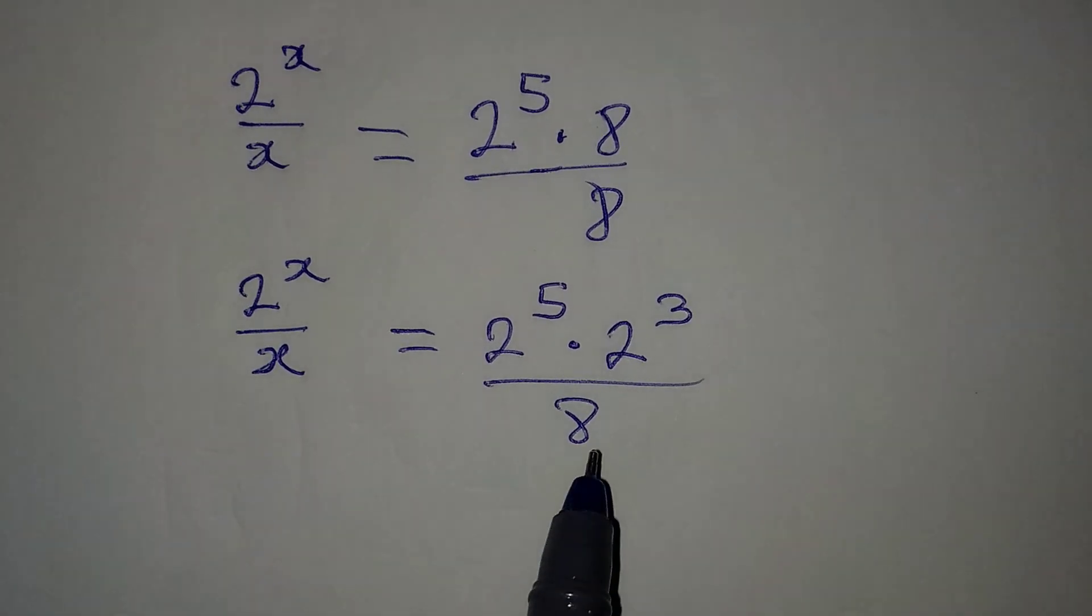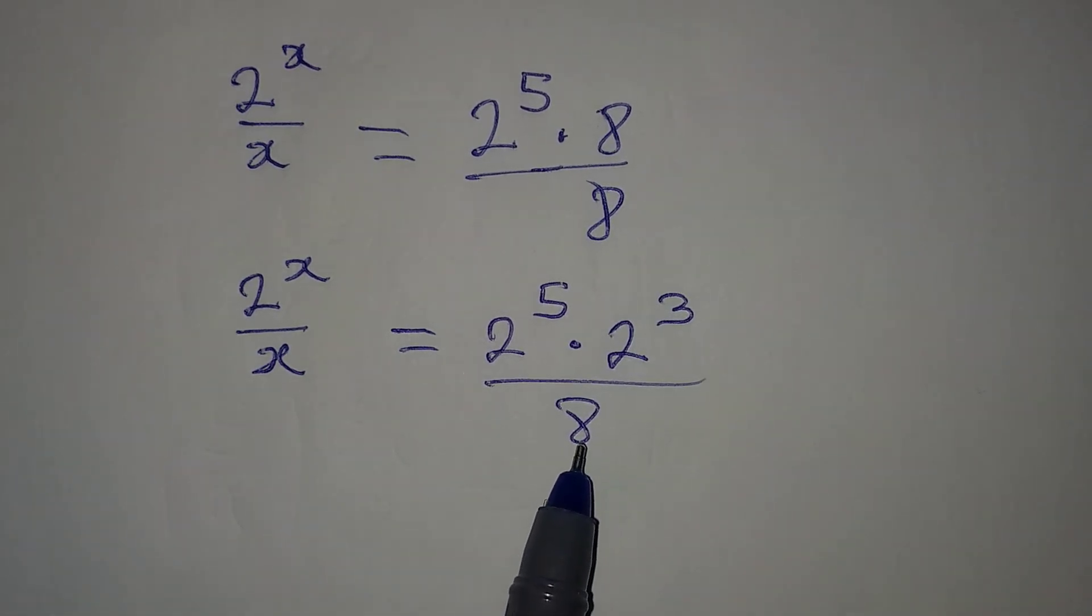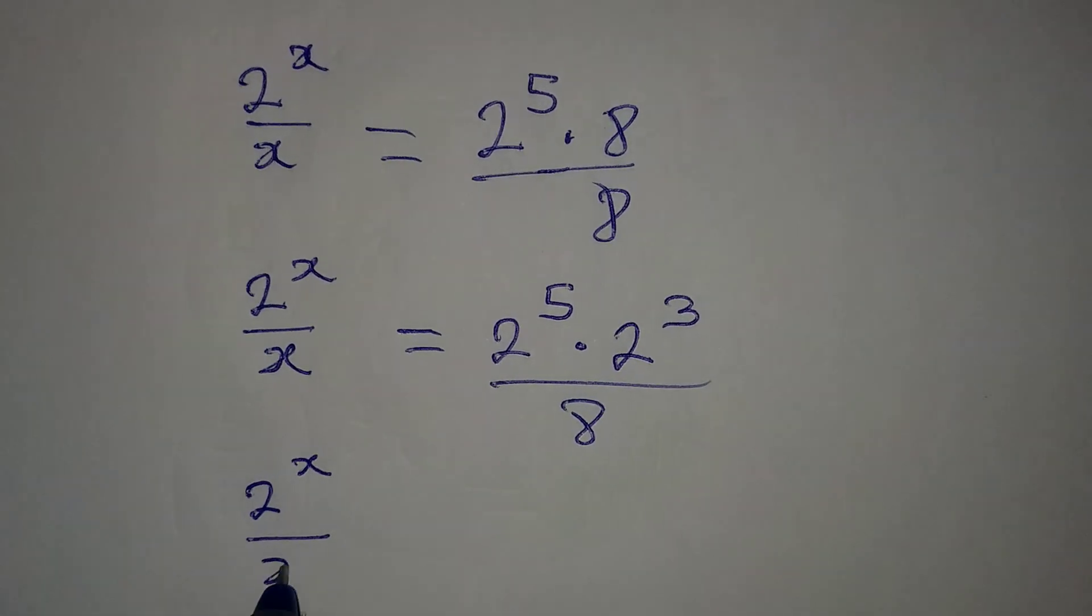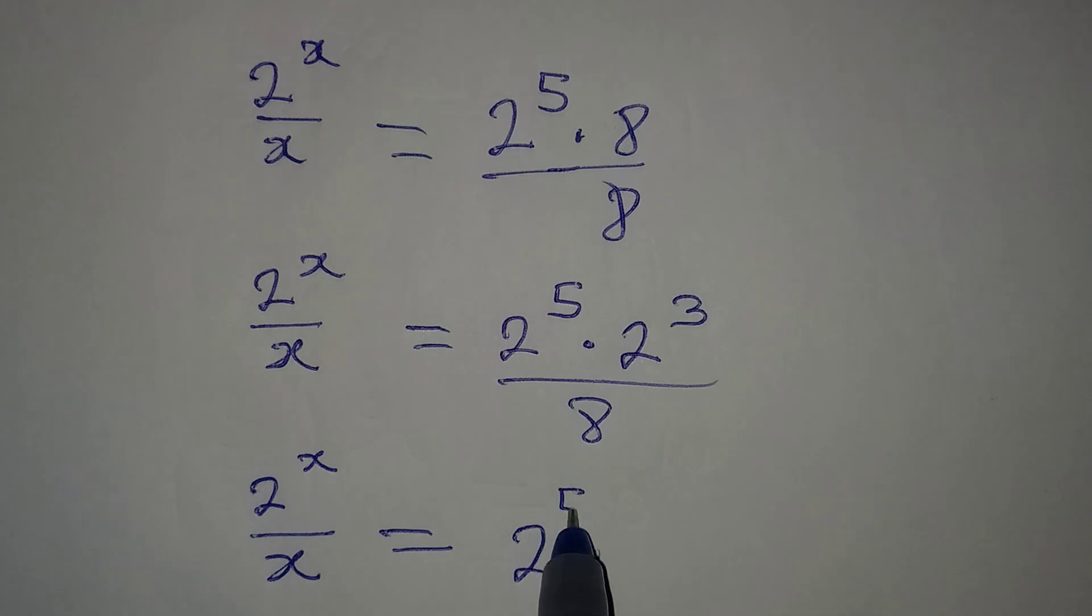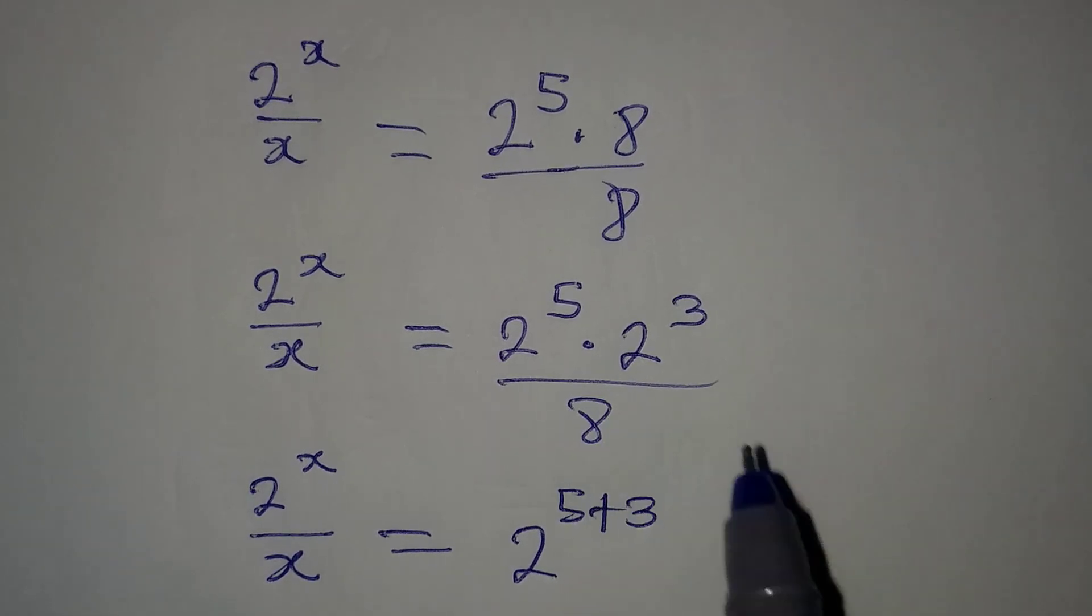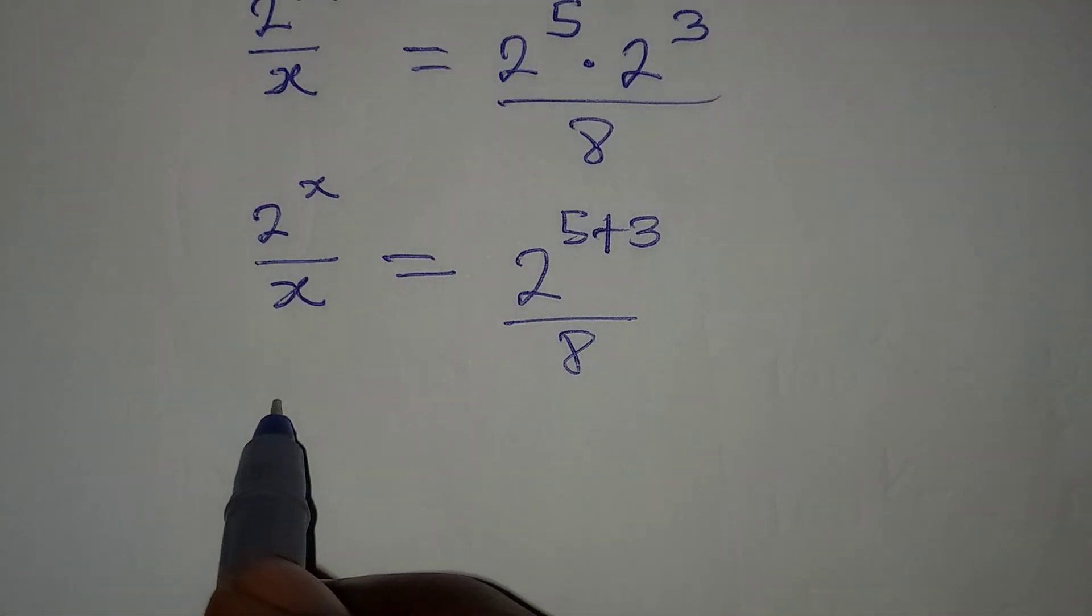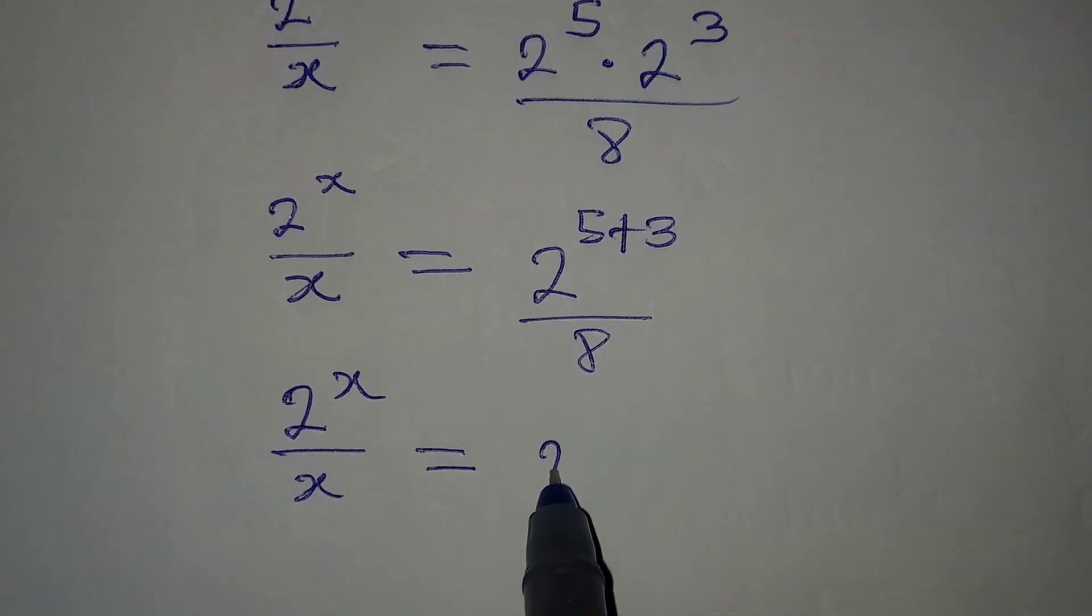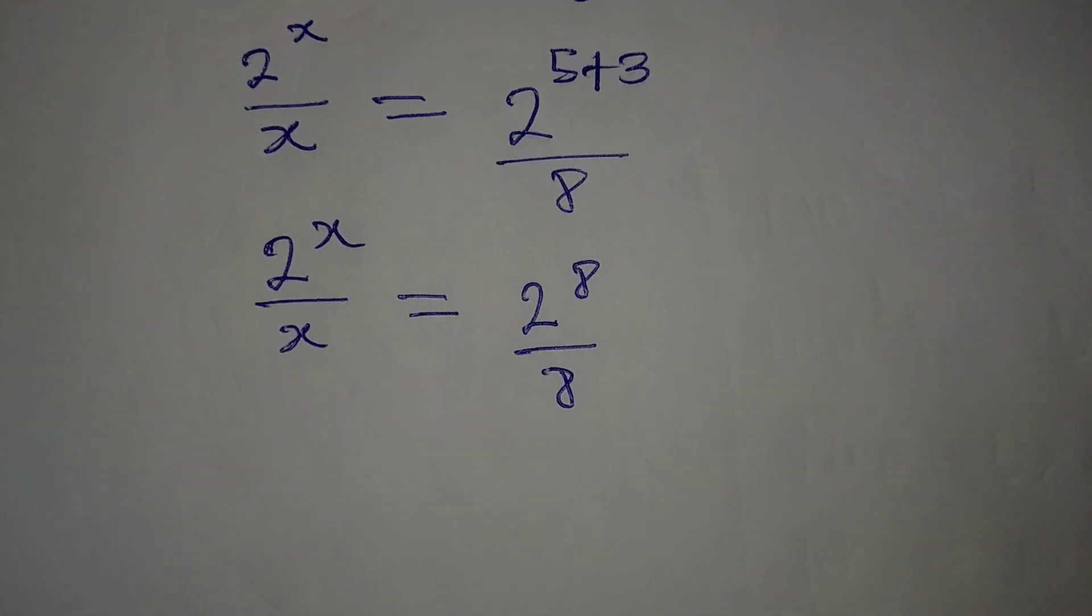And this is what I was looking at, trying to see that if I add the powers, we'll have 8, and the same 8 will be under it. Now, from here, 2 to the power of x over x is equal to, here, pick one of the bases, then we have 5 plus 3, because we are multiplying. This will be over 8. So, 2 to the power of x over x is equal to 2 to the power of 8 over 8. And this is what I have been looking for.